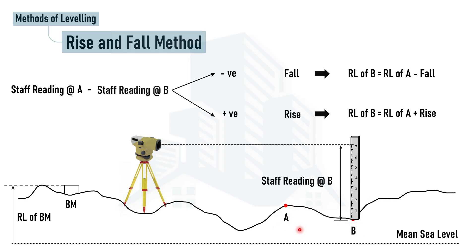So now you understand how the procedure works in both methods — the height of instrument method and the rise and fall method. The calculations are very easy, involving only addition and subtraction, but you need to understand the concept behind each step. Once you grasp the concept, you won't even need to memorize the formulas.